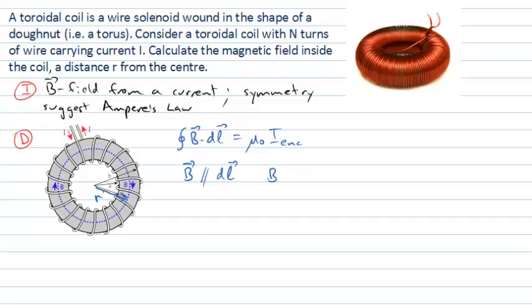And if I do that, I get the nice simplification, of course, that B dot dl will just equal B dl. The vector nature of this has been taken into account by choosing a loop where B is at all points parallel to the loop itself. And this really allows me to move straight into my evaluation step.